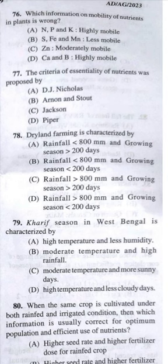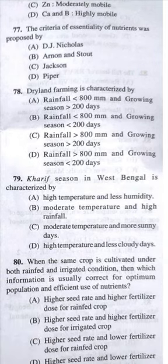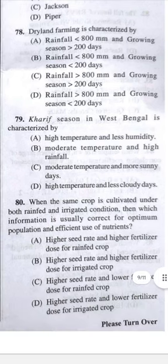Question 79: Kharif season in West Bengal is characterized by B — moderate temperature and high rainfall.